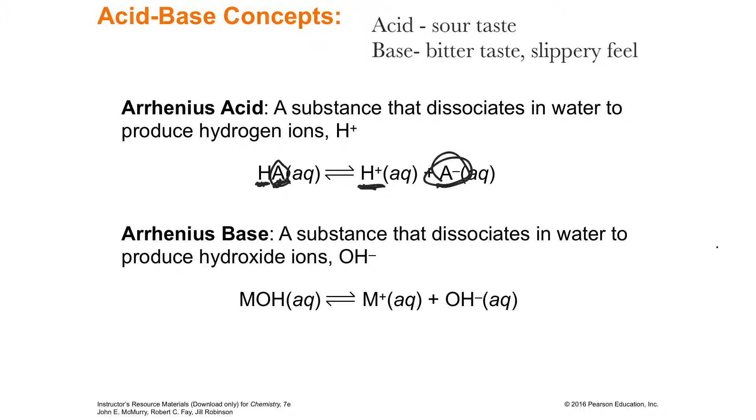Arrhenius found that any time that you put a base into water, you would produce hydroxide. So hydroxide, we're going to see, is a beautiful base. All of the very strong bases are hydroxides. So, here is something connected to a hydroxide, and then the hydroxide steals the electron, and so you end up with a hydroxide ion, and then whatever's left over. So that's an Arrhenius base.